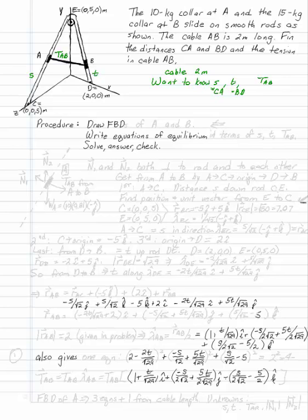In terms of particles, I have two interesting spots, so I'm going to draw free-body diagrams of both A and B. Neither of these individually is going to let me solve all the problems, but if I consider them both, I can write my equations of equilibrium in terms of my unknowns S, T, and TAB. Then I'll solve, answer, and check to make sure it makes sense.